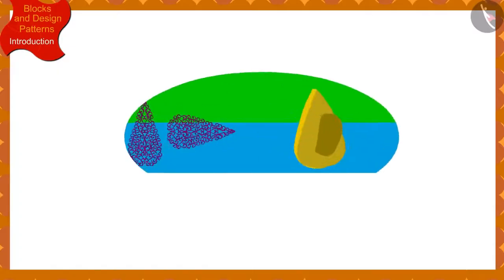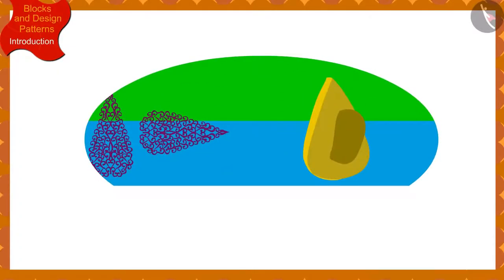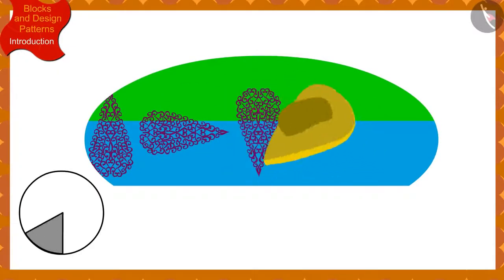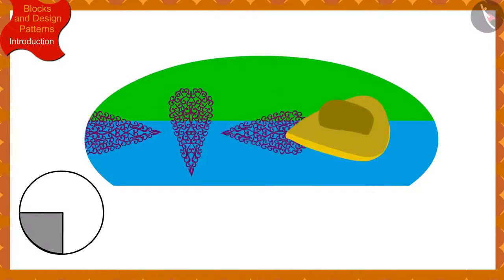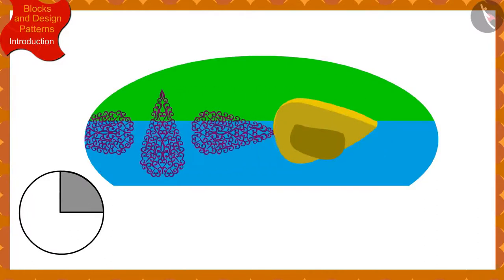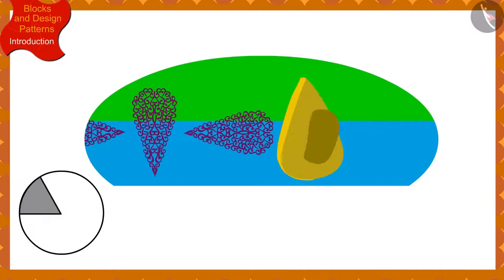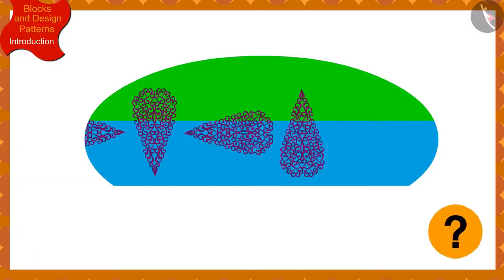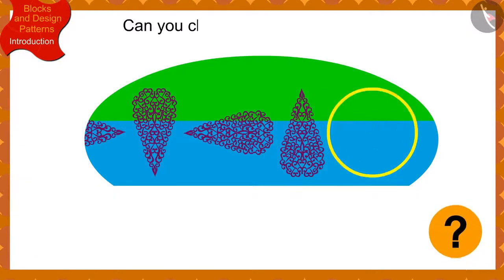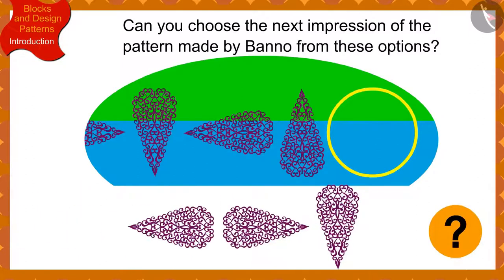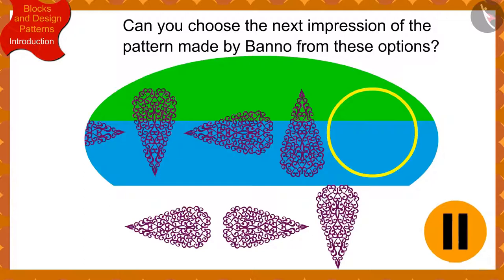Children, if Banno has made this design so far by rotating the block by a quarter in the clockwise direction every time, can you choose the next impression of the pattern made by Banno from these options? If you wish to, you may stop the video and think of the answer.